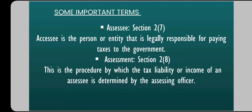So what is an assessee? Section 2, sub-section 7 explains this. Assessee is the person or entity that is legally responsible for paying taxes to the government. Who will pay tax to the government? Any individual can pay tax to the government — for example, in the future when we work in a job and our package is enough that we pay tax, we as individuals would be paying tax to the government. So we would call ourselves an assessee.